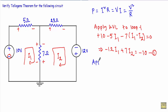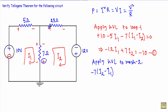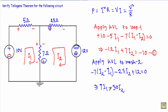Applying KVL to mesh 2: from this point to this point I encounter the 7 ohm resistor, giving a voltage term of minus 23I2. From this point to this point I encounter the 12V source with its negative terminal first and positive terminal later, so its voltage is plus 12, giving the equation equal to zero. Simplifying: 7I1 − 30I2 = −12. This is equation number 2.